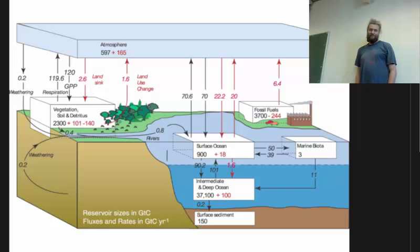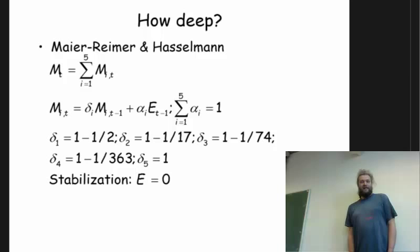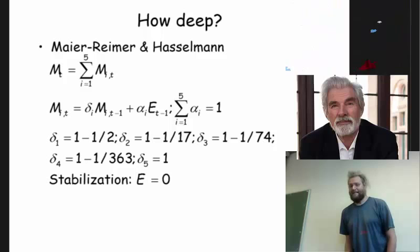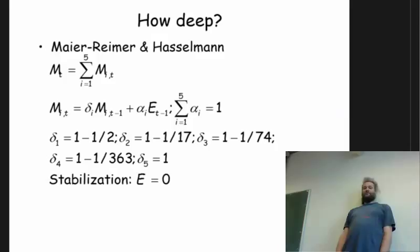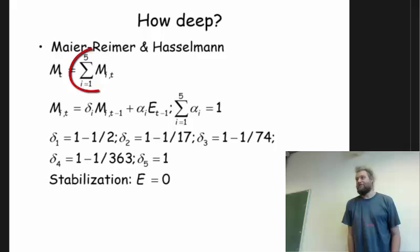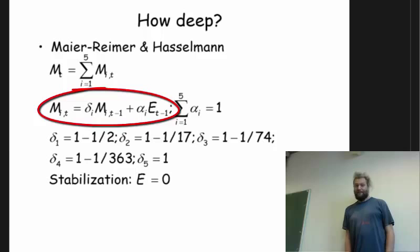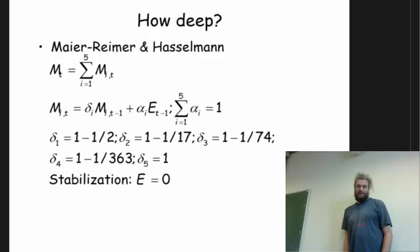Now if you turn this into a mathematical formulation — going back to the work of Antoine Meier-Neumann and Klaus Hasselmann — mathematically the best way of describing the carbon cycle is not through a single first-order difference equation, but rather through five first-order difference equations. The total concentration of CO2 in the atmosphere M is the sum of its components M sub i. Each component evolves according to its own dynamics — each has its own depreciation constant δ — and each takes its own share of emissions αE, where the alphas sum to 1.